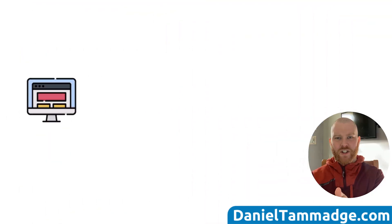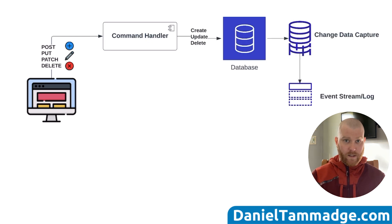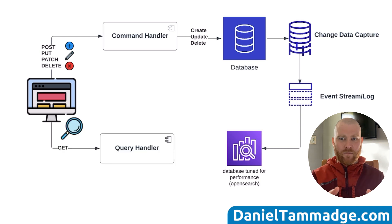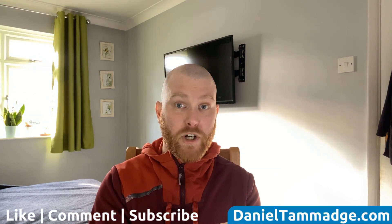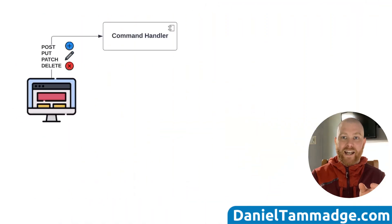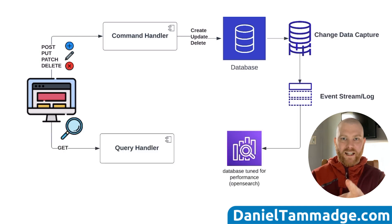The third pattern, CQRS — command query responsibility segregation — is a pattern that involves separating the processing of commands or events that update entities from the processing of queries. This approach can help improve performance and scalability, allowing different processing pipelines to be optimized for their specific tasks. The idea is to use a separate process for read and write operations. The write process is typically used to create, update and delete objects and is optimized for consistency, while the read model is used to query the state and is tuned for performance. By separating the two, CQRS can help improve scalability as the read and write models can be scaled independently. However, it can also lead to increased complexity as there are now two separate pipelines to manage.